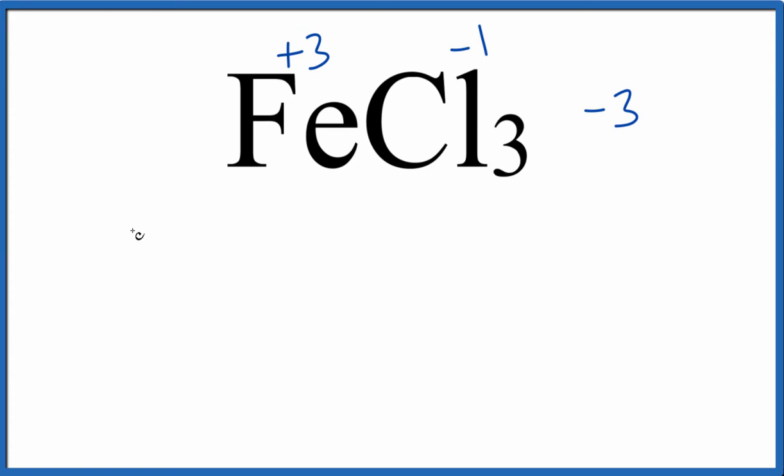If we were to write the name, we would call it iron. Instead of writing +3, we put parentheses with the Roman numeral III inside the parentheses, and we call that iron(III) chloride.